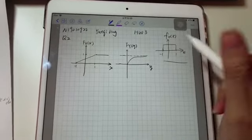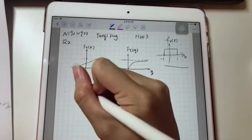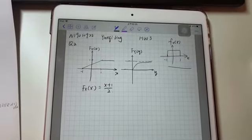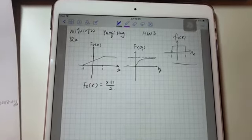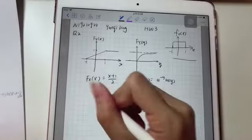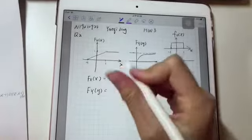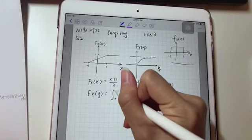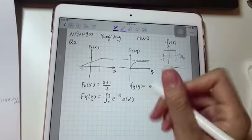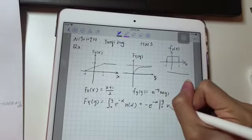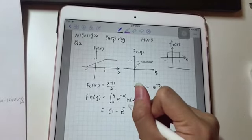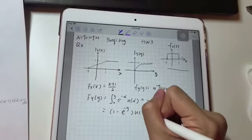From this little f_x, we can get the large F_X, and there is its expression. Also, from the little f_y expression, we can get the large F_Y(y). So y will be the integral from 0 to y of e to the minus alpha power, and u(alpha). It will be 1 minus e to the minus y power, and multiply u(y).